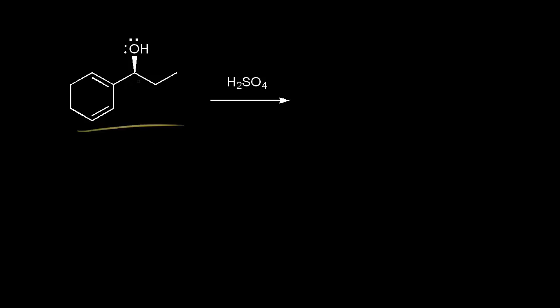On the left, we have our alcohol. The carbon that's bonded to the OH is our alpha carbon, and the carbon next to that would be our beta carbon. This beta carbon has two beta protons, because in our E1 mechanism we're going to lose a beta proton. The carbon on the left of the alpha carbon has no hydrogens, so we only have to worry about the carbon on the right.